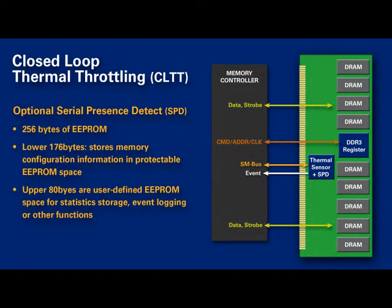There's an optional feature on some devices called serial presence detect, or SPD. The SPD is basically 256 bytes of EEPROM — the lower 176 bytes are used to configure DIMM and system configuration information, while the upper 80 bytes are user-configurable and can be used for statistical storage, event logging, or any other function.